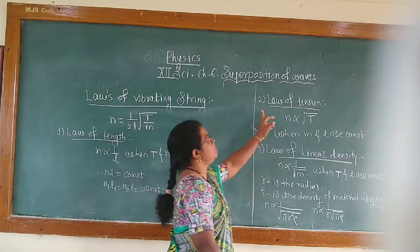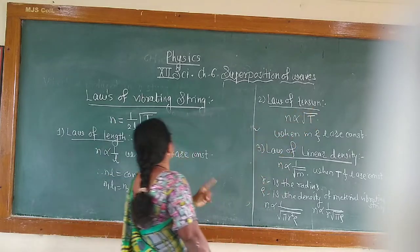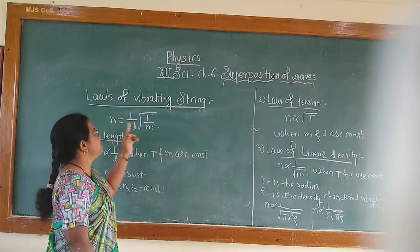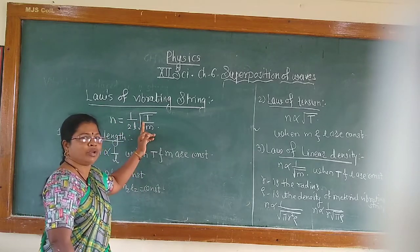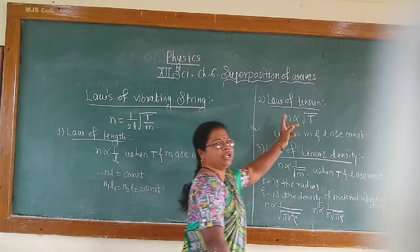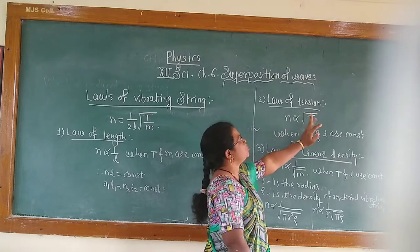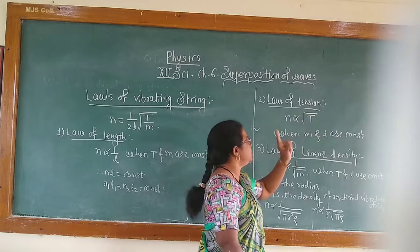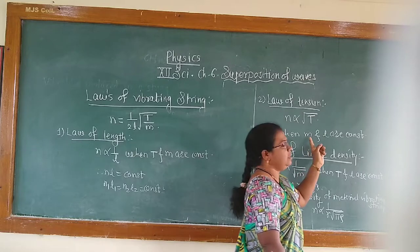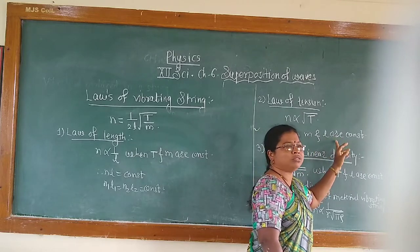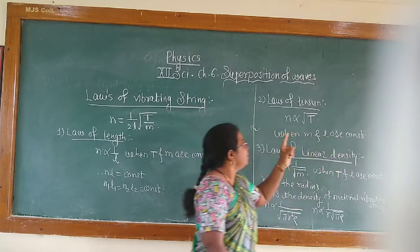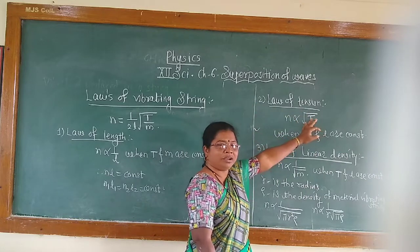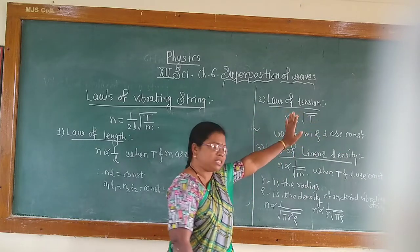Now, second law, that is law of tension. By using once again this equation, we write N is directly proportional to square root of T, tension. Frequency is directly proportional to square root of tension when M and L are constant. This is second law of tension.